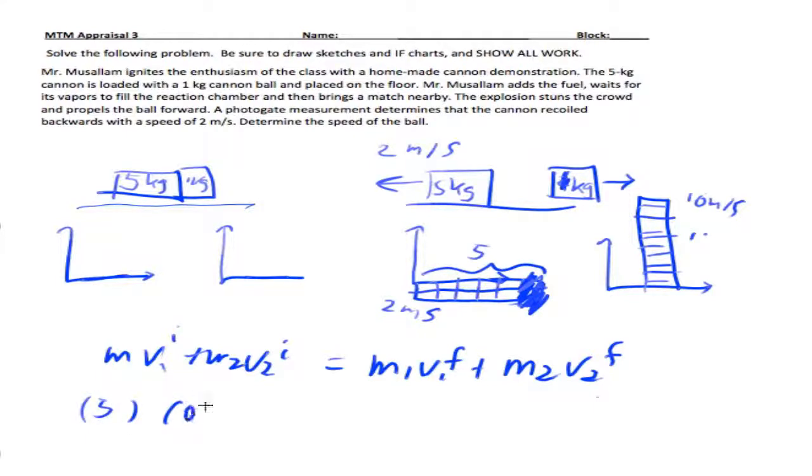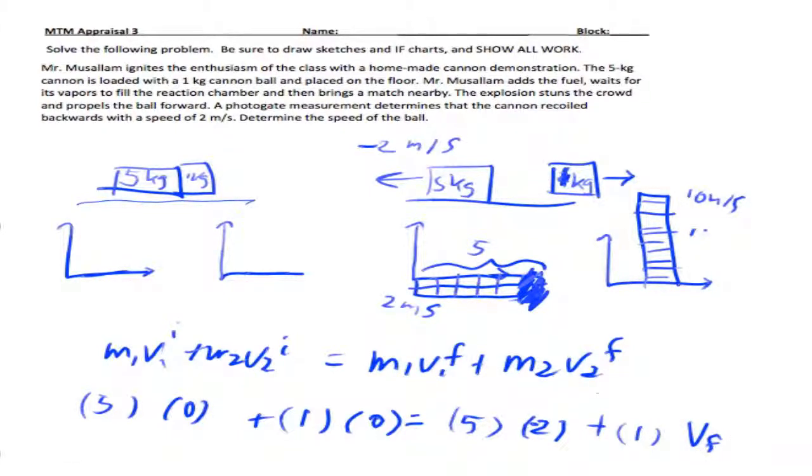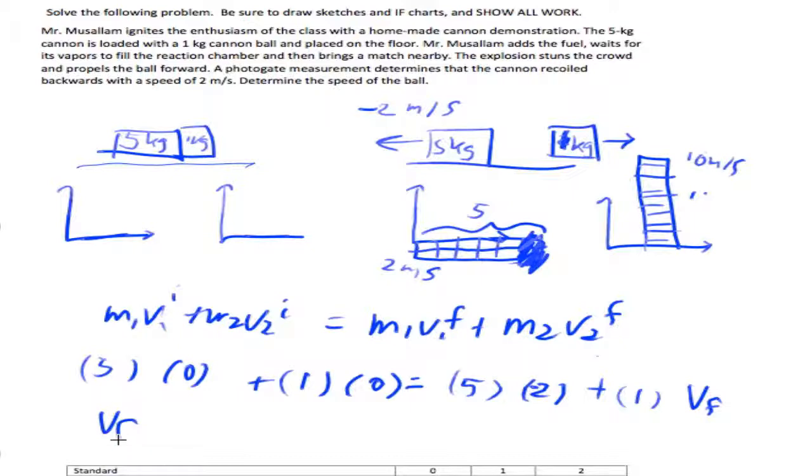And this means five times zero plus one times zero equals five times two, and it's going backwards at negative two, plus one times V final. When I actually solve this, I'm getting V final is in fact ten meters per second to the right.